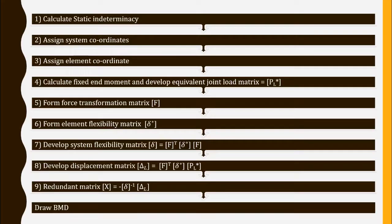For analyzing the beam using the flexibility method we have ten different steps. The first step is to calculate static indeterminacy, and according to the number of static indeterminacy we will assign system coordinates, then assign element coordinates. After that we have to calculate the fixed end moments, and using these fixed end moments we can develop equivalent joint loads — which are just the opposite sign of the fixed end moments.